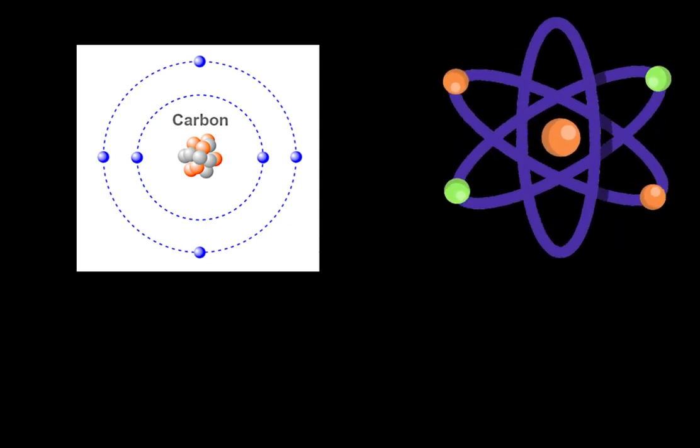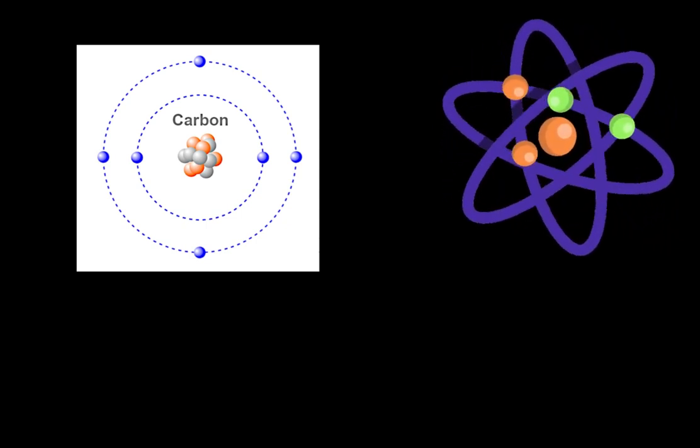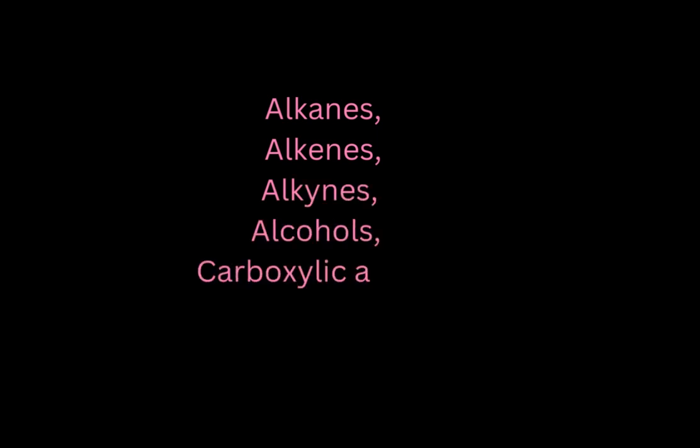Some common organic compounds include alkanes, alkenes, alkynes, alcohols, and carboxylic acids. These compounds have distinct structures and properties that determine their behavior and reactivity.